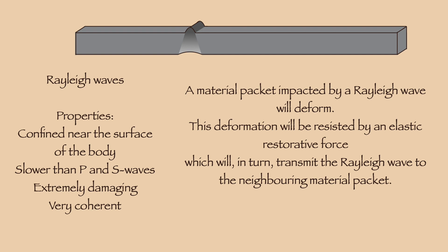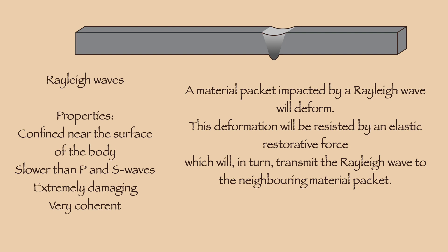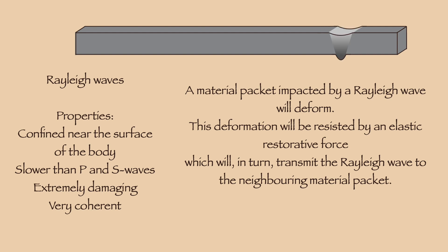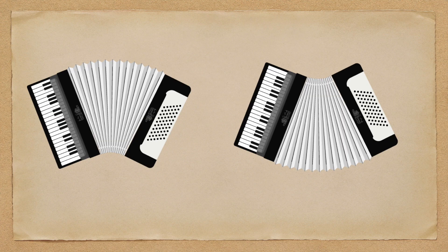Rally waves are a little bit slower than S waves, but they are the most destructive form of seismic wave, causing most of the material damage that results from earthquakes. Because of their mode of generation, they are trapped near the surface layers of the body and remain reasonably coherent for long periods of time, though their energy does decay exponentially with distance. It's not easy to come up with an everyday analog for this type of wave, but they're kind of like an accordion, with the top compressing while the bottom expands or the bottom compressing while the top expands.